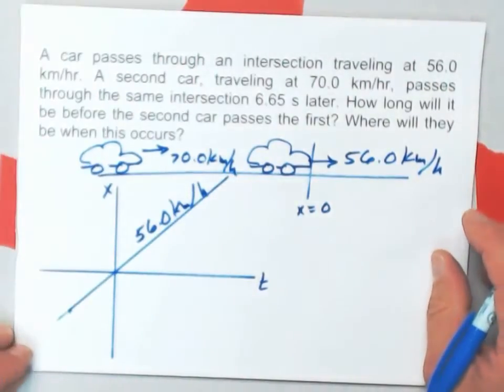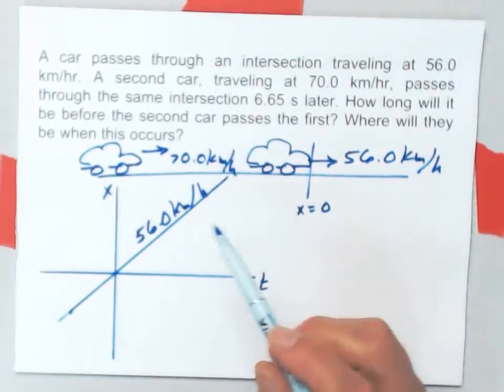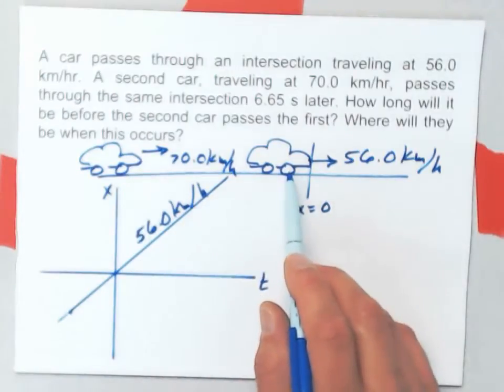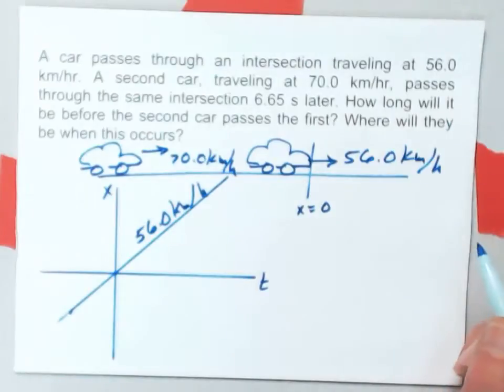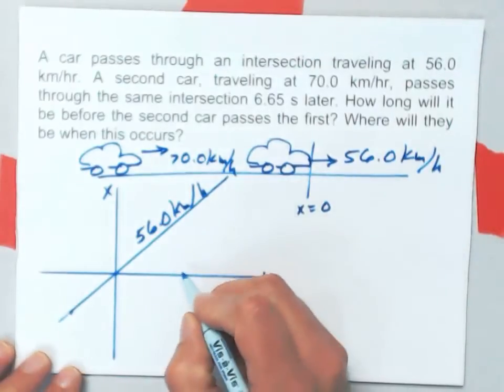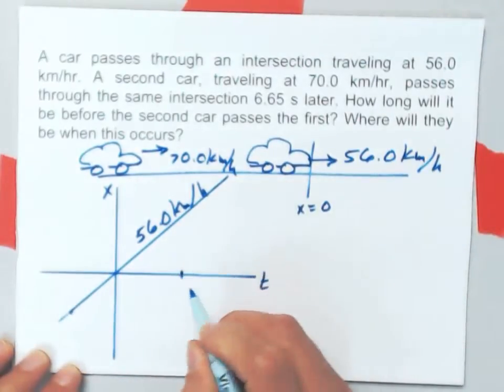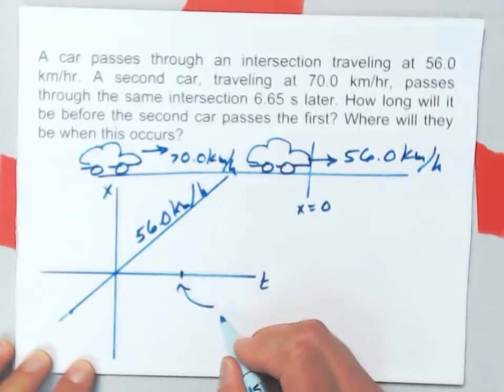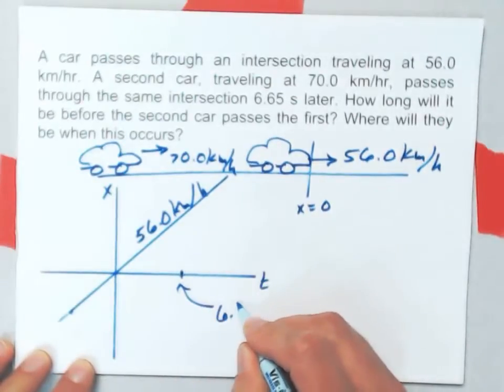The second car is presumably traveling at 70 kilometers per hour at the same time this one's going at 56, or I can assume that without messing up the problem. But it doesn't pass through the intersection until 6.65 seconds.